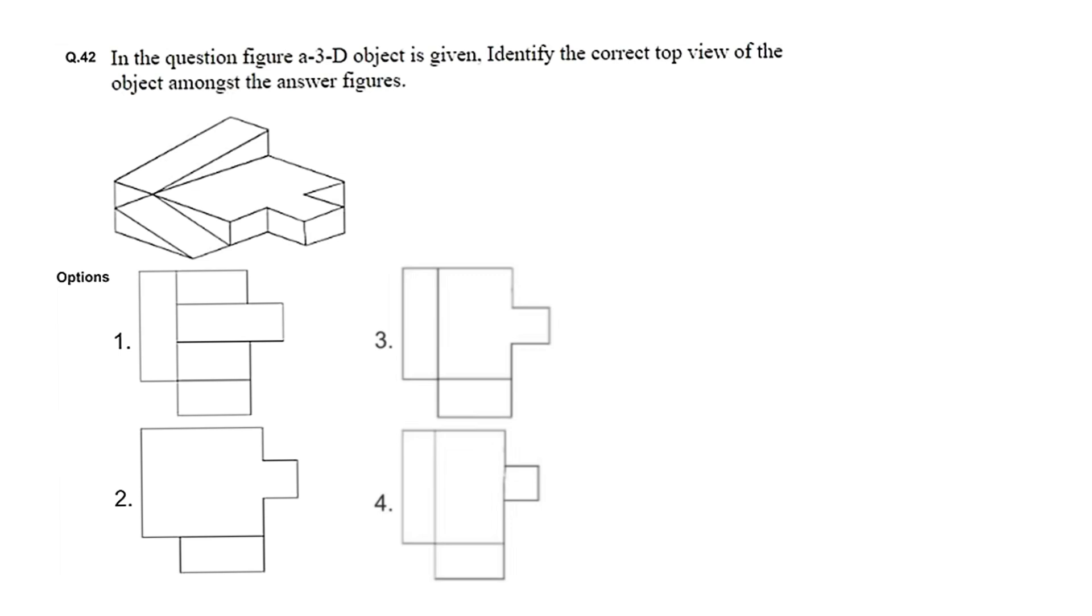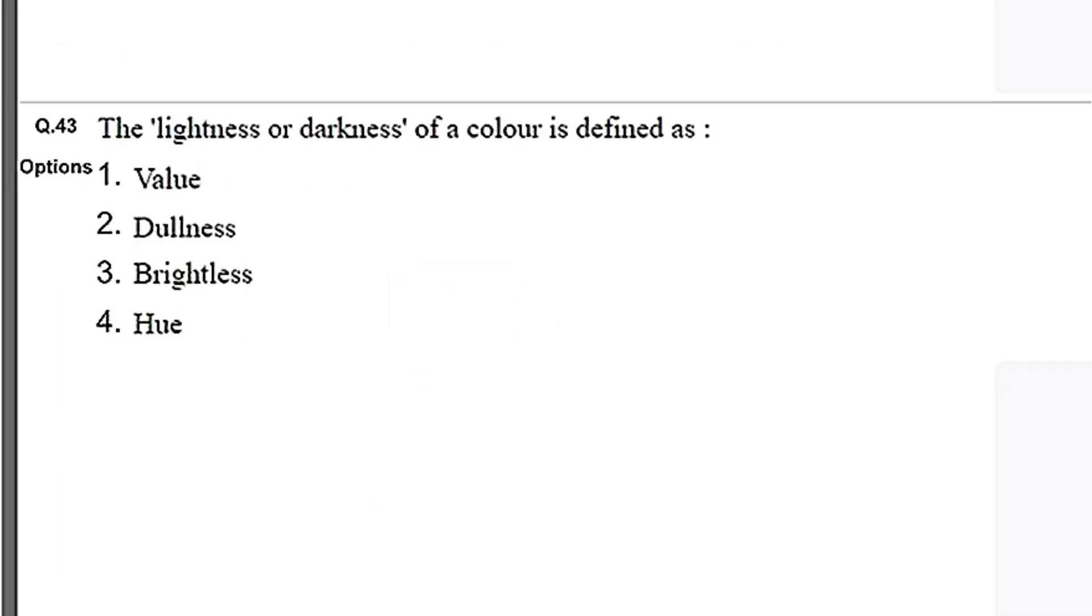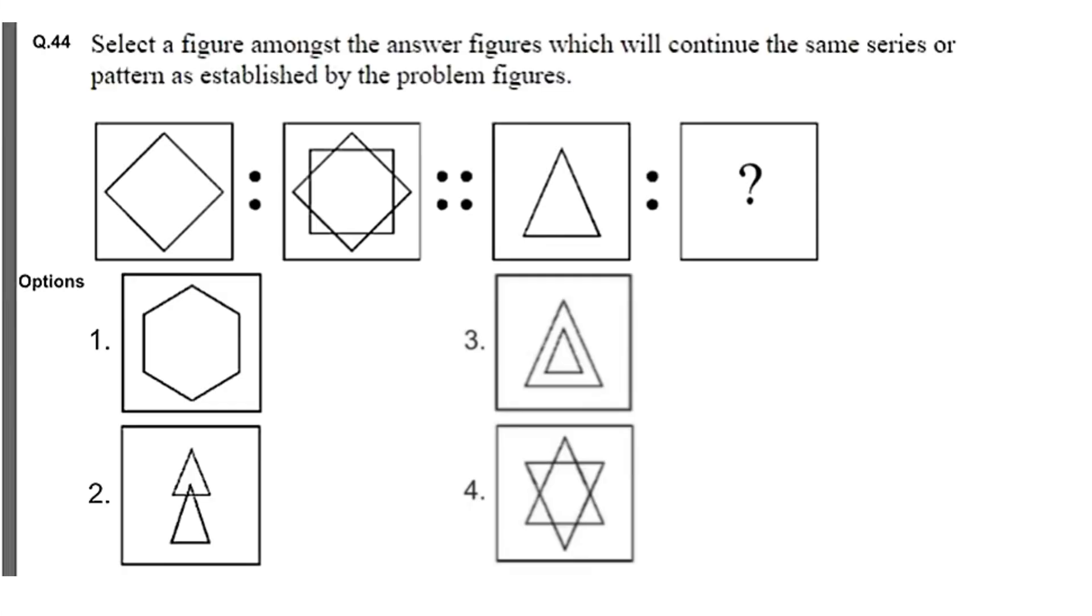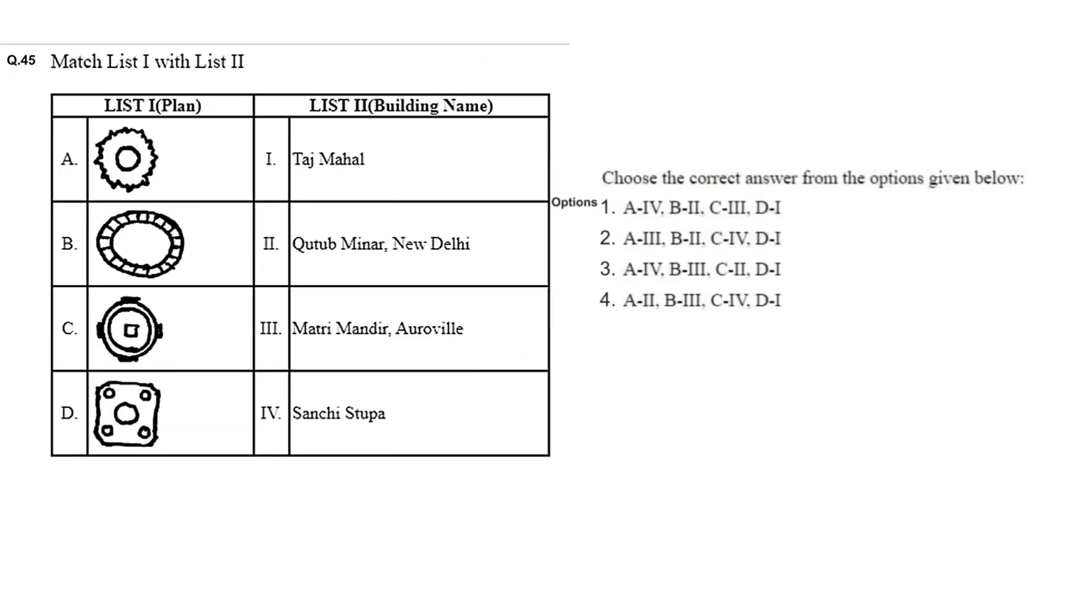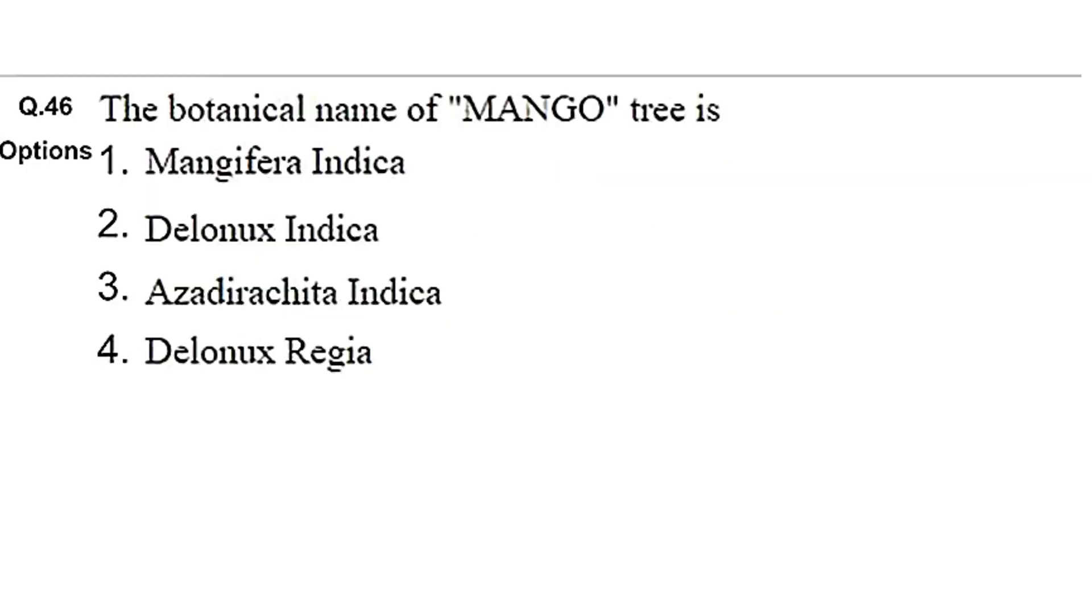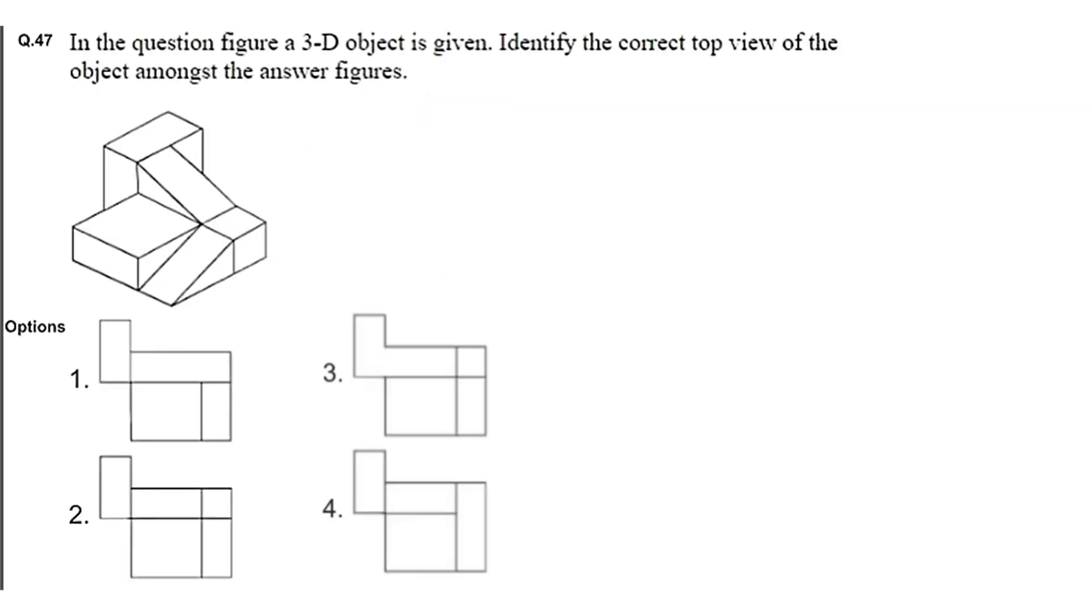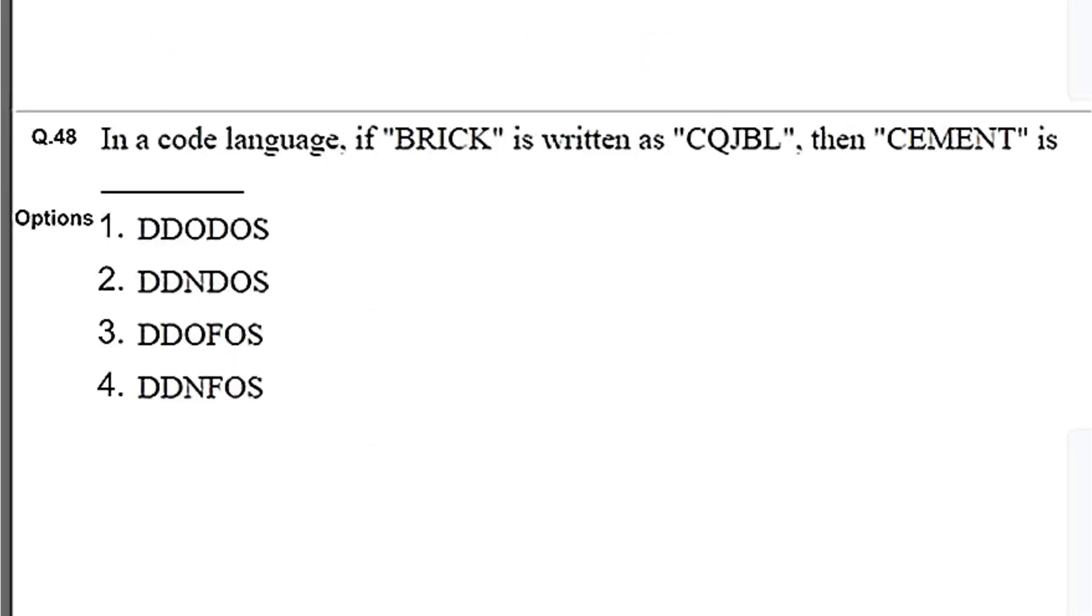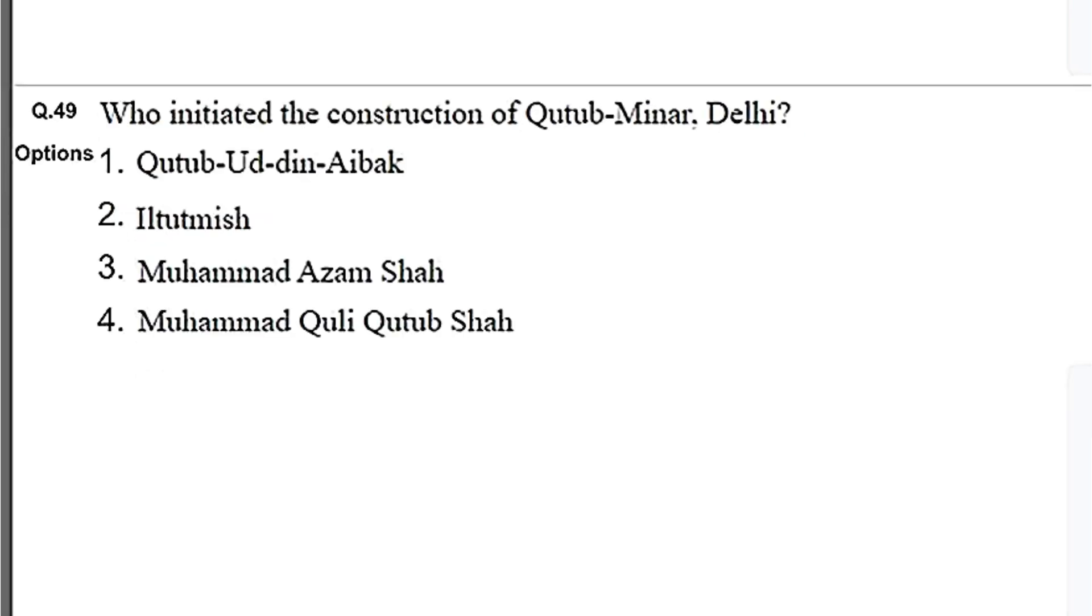The overall syllabus for aptitude consists of GK for architecture, history for architecture, important buildings, monuments, famous architects of the world, then there is 2D, 3D elevation, plan observation, verbal reasoning, non-verbal reasoning, situational questions, important dates, language, analogies, aptitude, logical reasoning. This is all you have to be well prepared with to score good without negative marking.